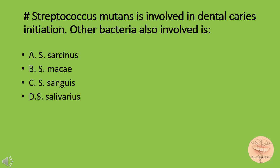Streptococcus mutans is involved in dental caries initiation; another bacterium also involved is: option A) Streptococcus sarcinus, option B) Streptococcus machai, option C) Streptococcus sanguis, or option D) Streptococcus salivarius. The correct answer is option C: Streptococcus sanguis.